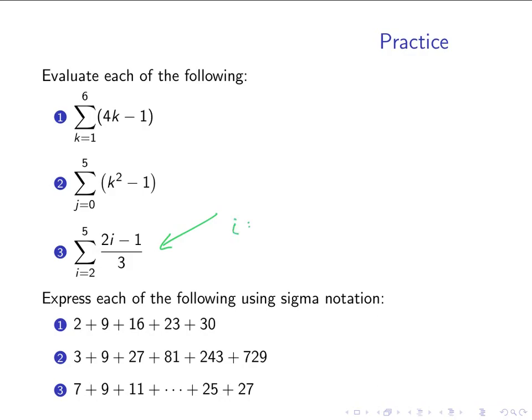But notice that I can approach this exactly the same way I did before. My index is i. My possible values are 2, 3, 4, and 5. The values of i run from 2 to 5. And for each of those, I can figure out what this expression is. When I plug 2 in for i in here, I get 2 times 2 minus 1 over 3, which is 1.